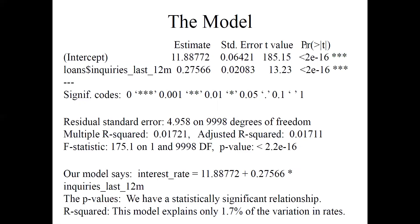But when we look at our R-squared value down there, we find that this model explains 0.017 of the variation in interest rates. 1.7% of the variation in interest rates is explained by this particular factor. That's not very much.